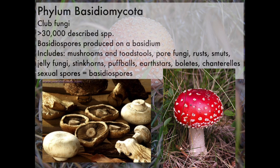The thing that unites all of these fungi is that they produce their sexual spores — the products of meiosis — on a structure called a basidium that looks kind of like a club. The spores that are produced on that basidium are called basidiospores.